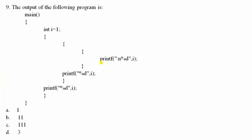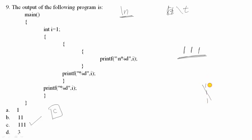Ninth question: they have given a piece of code executing printf three times. Before %d, there is a \n (new line character). The value of i is 1 each time. So you get 1, 1, 1 printed — option C follows. Note that where you place \n (newline), \t (tab space), or carriage return is very important for output formatting.